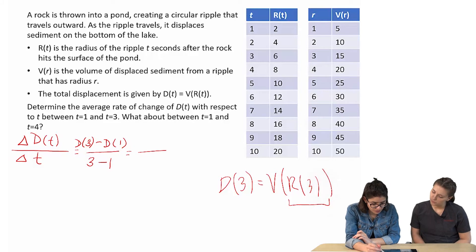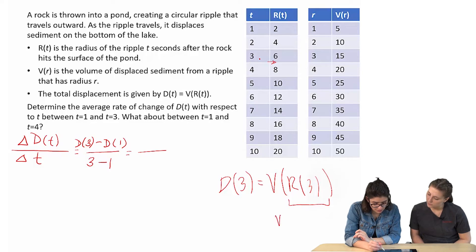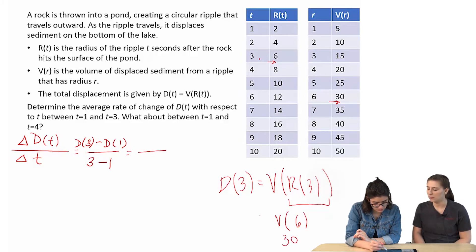So R(3), we're looking at 3, R(3) would give us 6. So now we have V of, we can replace R(3) with 6. Okay. And V(6), you know, just gives us 30. Oh, okay. D(3) is just 30. Okay, so we get a 30 here.